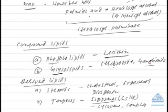If the additional group is a carbohydrate — since 'glyco' represents carbohydrates — the compound is called a glycolipid. Cerebroside, found in the brain, and ganglioside, found in ganglia, are examples of glycolipids.